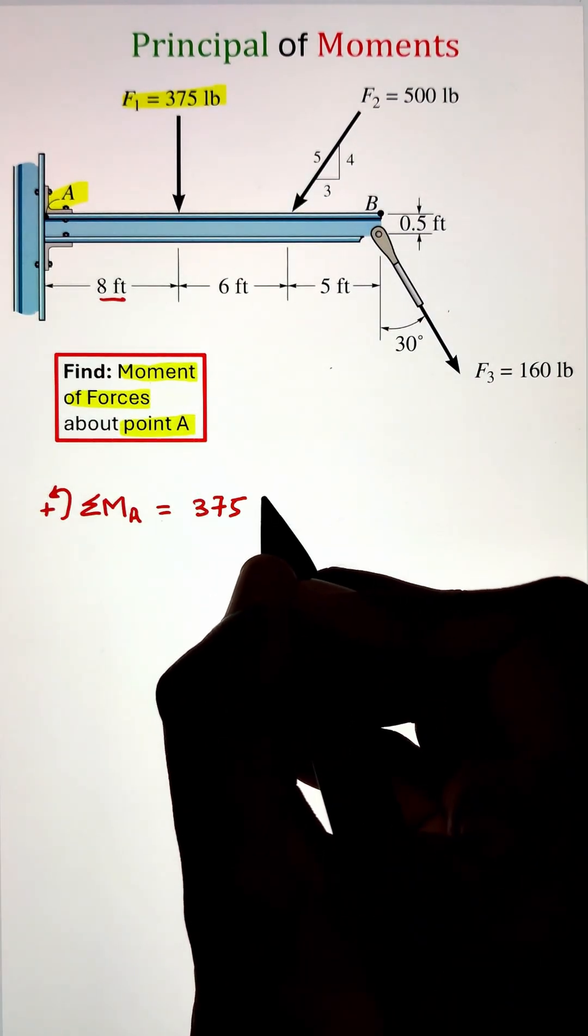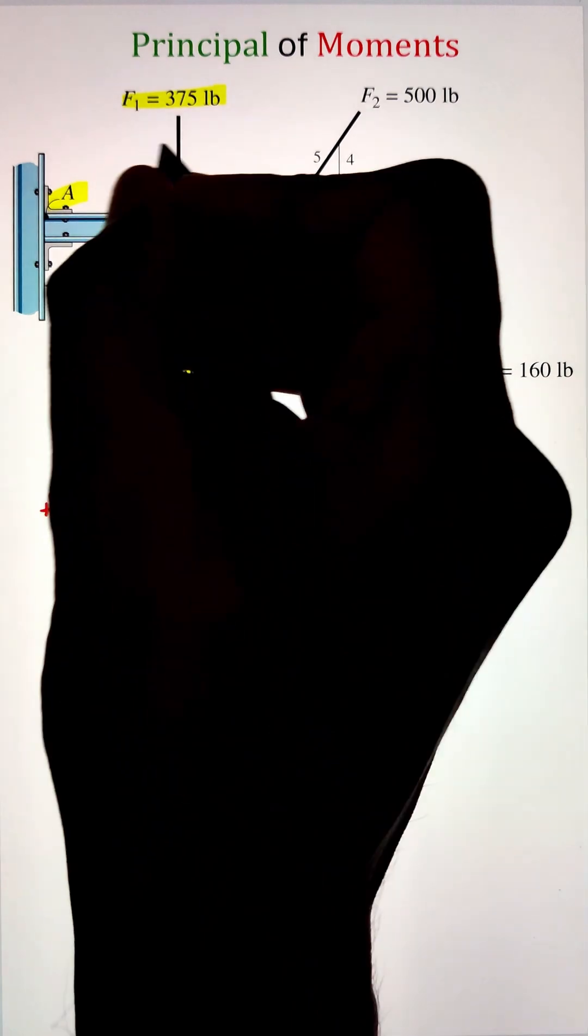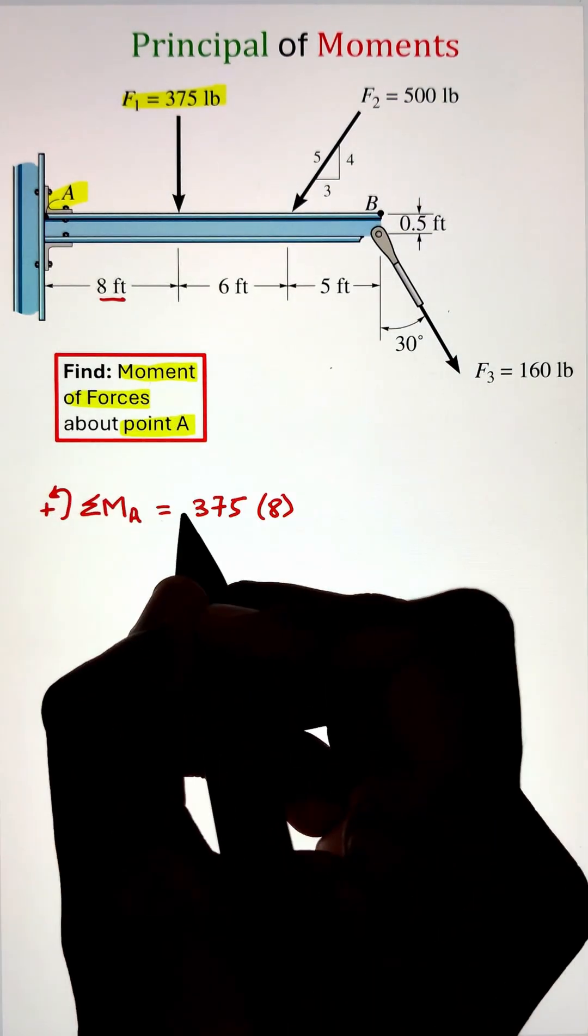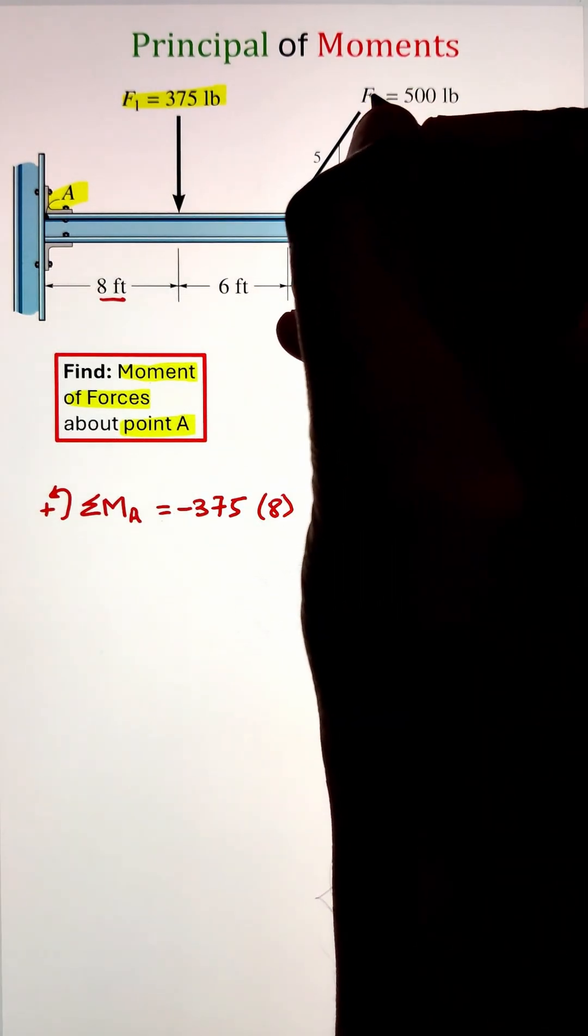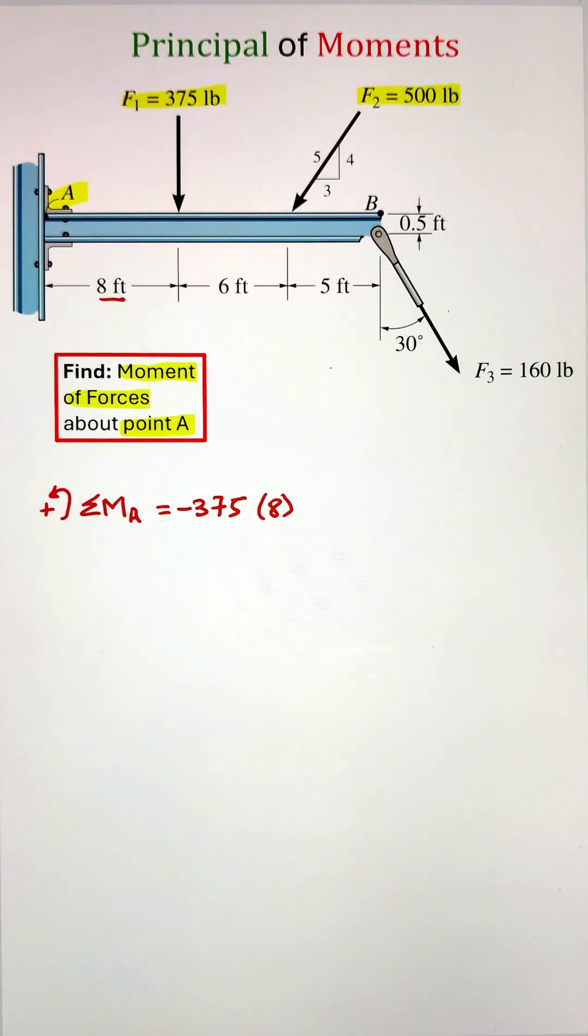Next, we need to establish whether it is making a clockwise or counterclockwise moment. Since the force is acting downward and the moment arm is to the left of the force, it is going to make a clockwise moment.